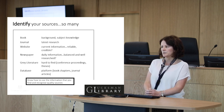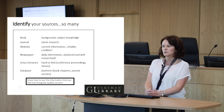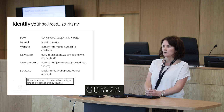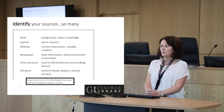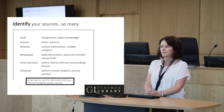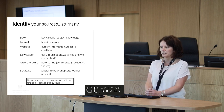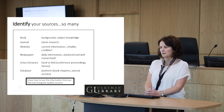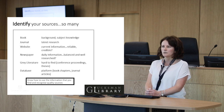There are so many sources, and you need to decide which to focus on for your research. You may want to select a book for background or subject knowledge, a journal for the latest research, or a website for current information — though you need to ensure it is reliable and from a credible source. Newspapers can be useful for daily information, but the piece should be balanced and well researched. Grey literature — such as conference proceedings and theses — is often published but more difficult to find. A database is a platform where many different types of information sources come together, such as book chapters or journal articles.